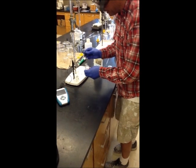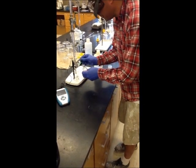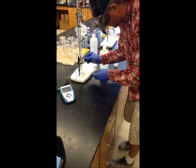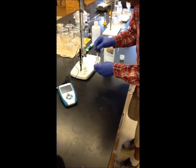Then we add three drops of the indicator phenolphthalein to our acidic solution, and then we begin to titrate.